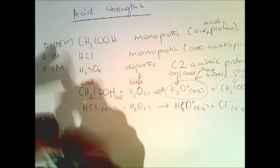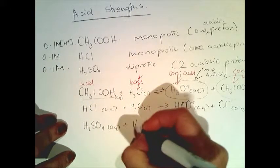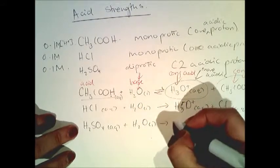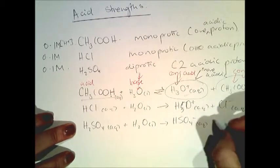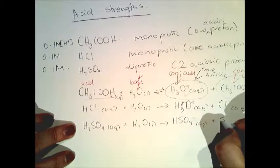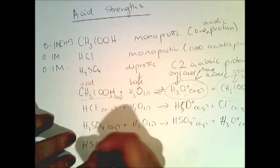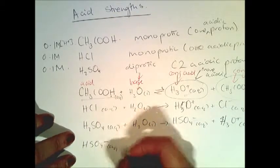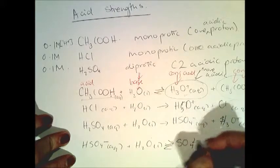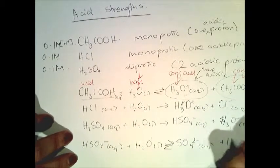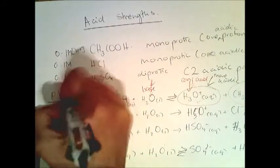With H2SO4, it gets rid of its first proton — essentially going to completion — giving H3O+. Then HSO4 minus reacts with water to give SO4 2 minus via an equilibrium, because it doesn't readily release its second H. So we may want to work out the pH of all of these acids.